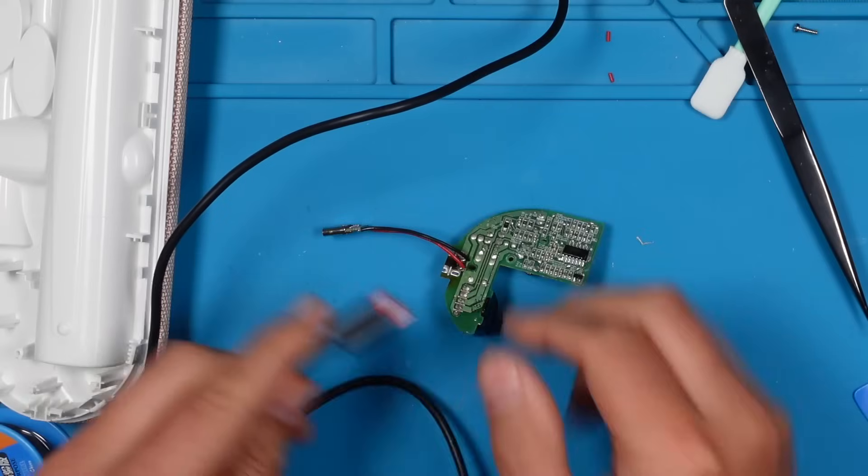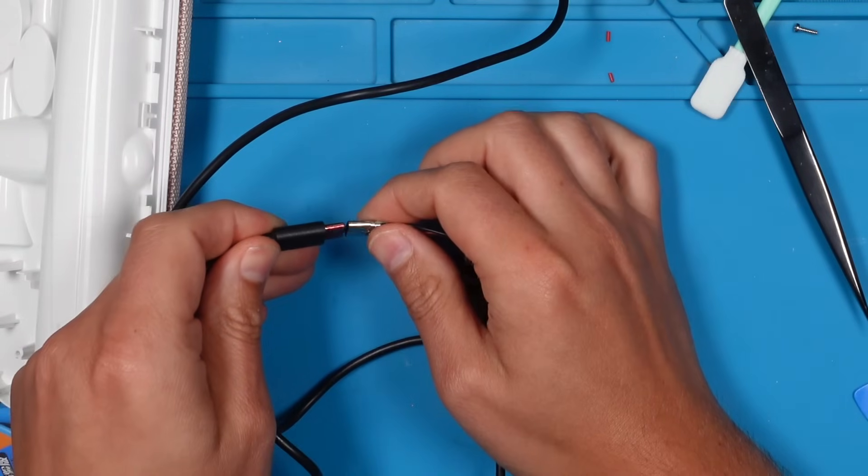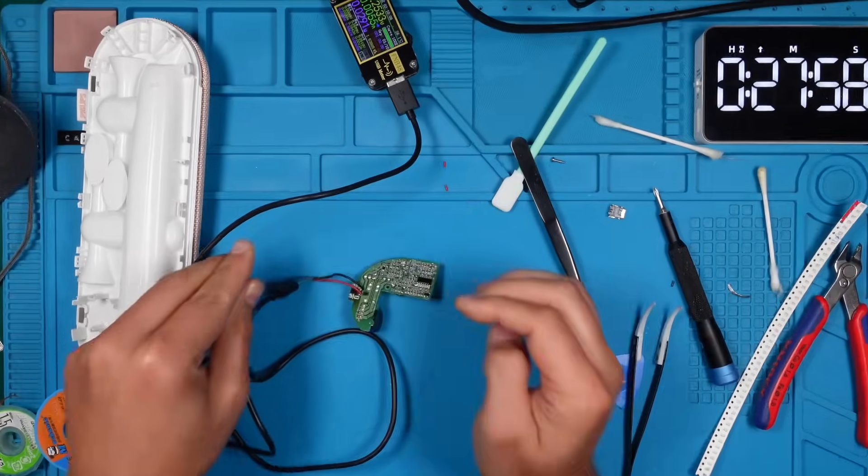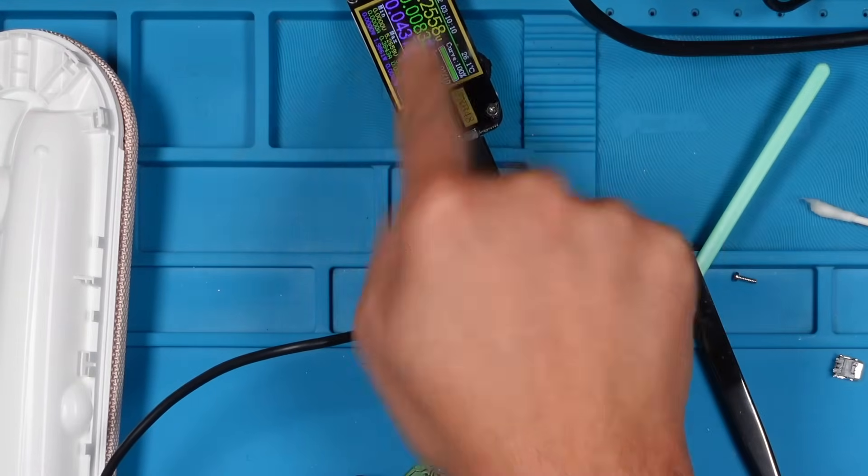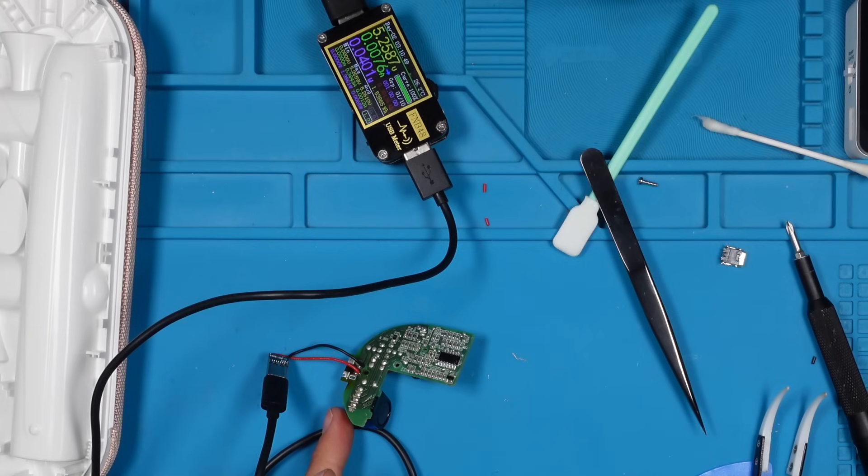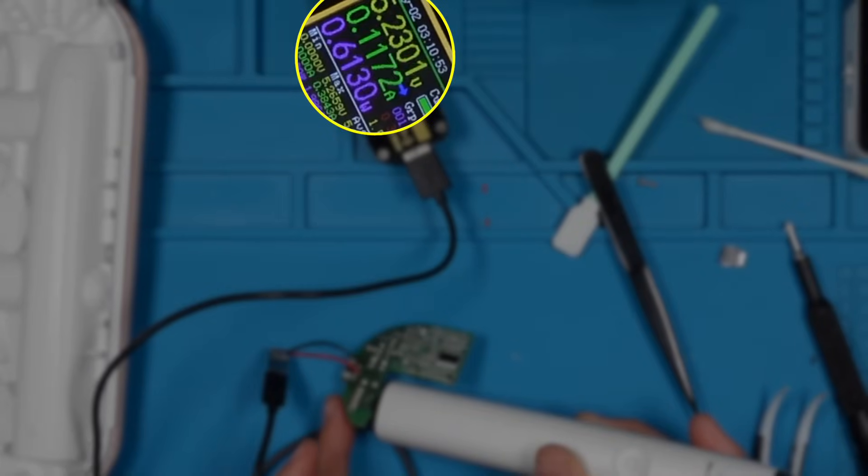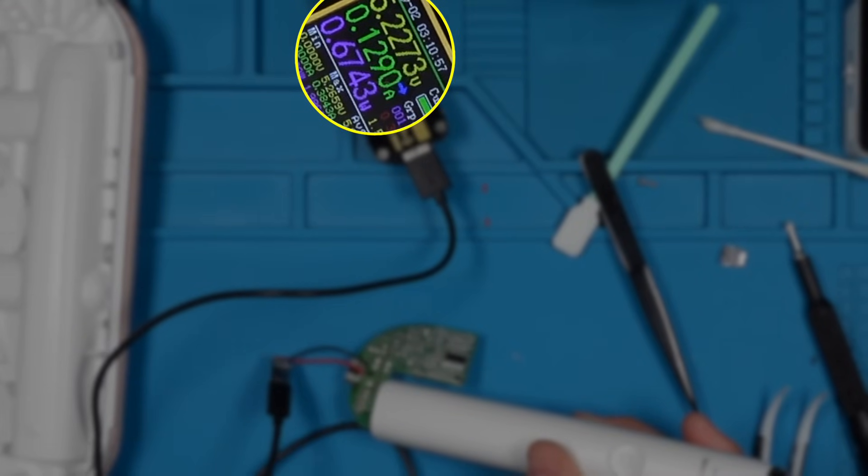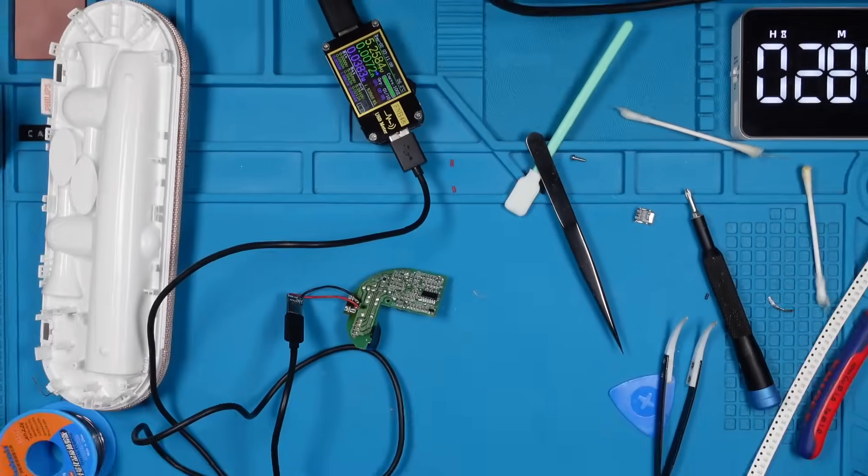Let's check it out. Finally, we see a current draw. As we approach with the toothbrush, the current draw should increase since it's charging. Nice! The green number shows us around 0.125A. When we take the toothbrush away, the current draw drops down as expected.